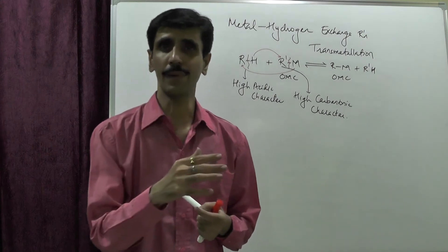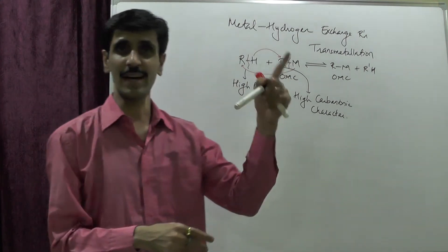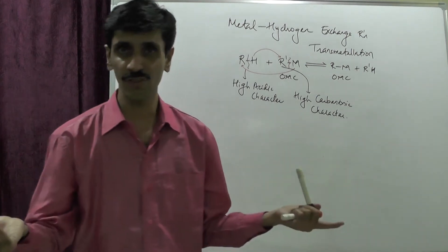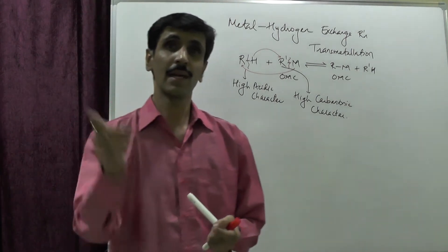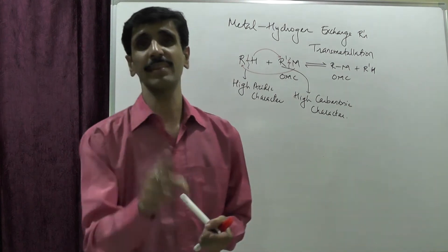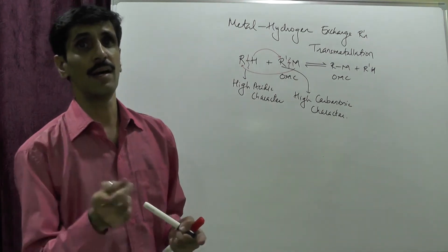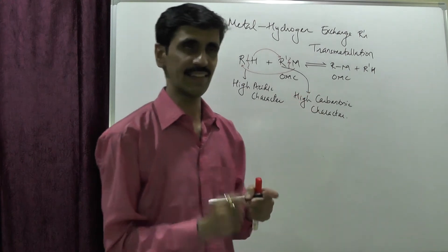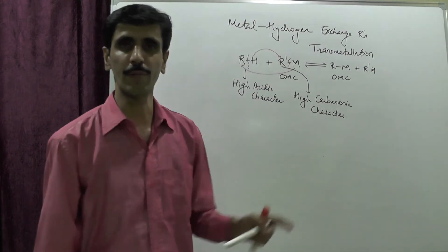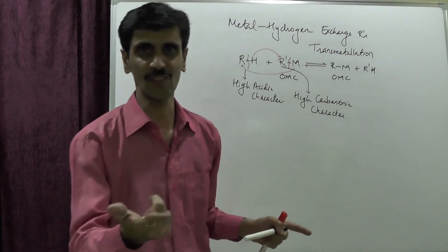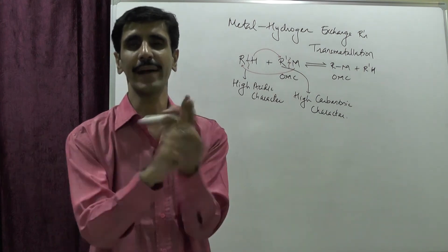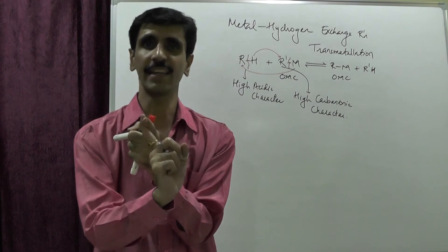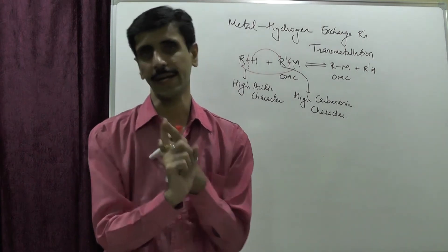The organic compound RH should have a higher acidic character, so it is going to release H+ ions very fast. At the same time the hydrocarbon of the organometallic compound must have a higher carbanion character, meaning it will be in the form of R' minus. Both combine very fast, resulting in R'H, and we get the organometallic compound R'M.